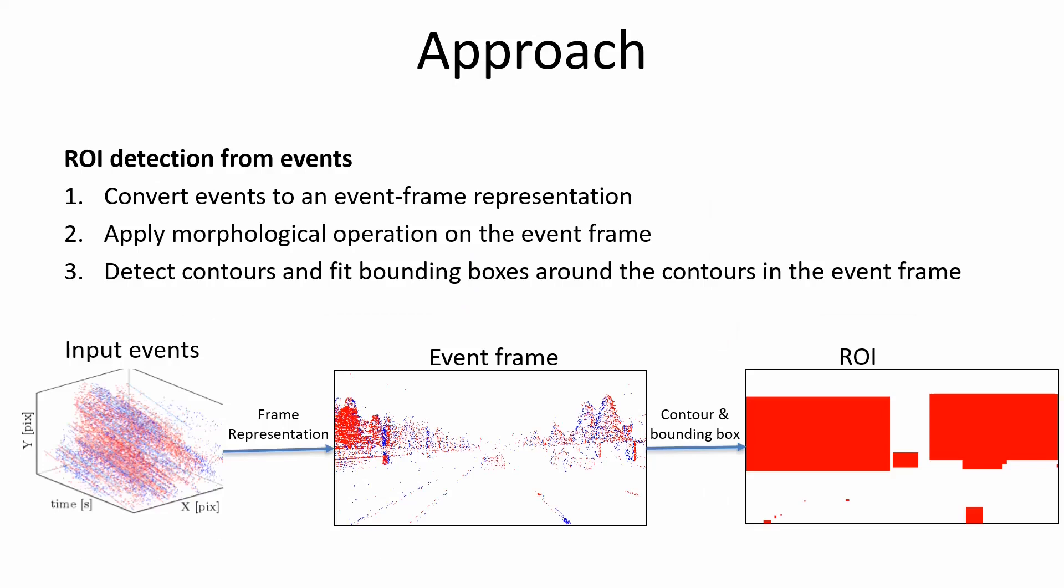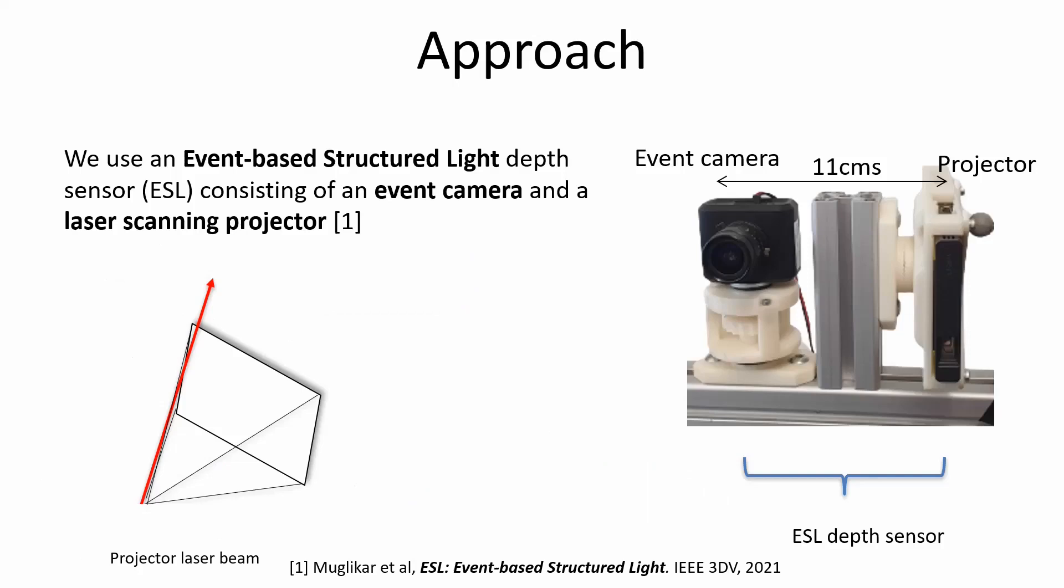We now explain how the depth controller works with our prototype depth sensor. We consider an event-based structured light depth sensor consisting of an event camera and a laser scanning projector. The projector moves in a raster scanning fashion from left to right and top to bottom. Control of the depth scanner is achieved by controlling the laser projector. We generate a binary mask to signal the laser beam to switch off at the corresponding pixel location. The projector therefore only illuminates the pixel where the mask is one.